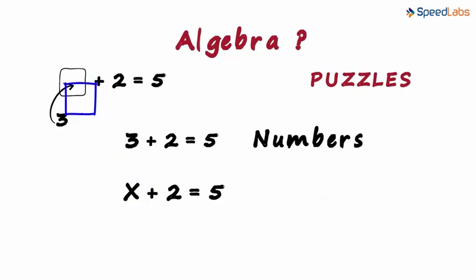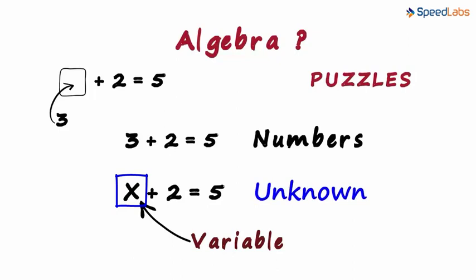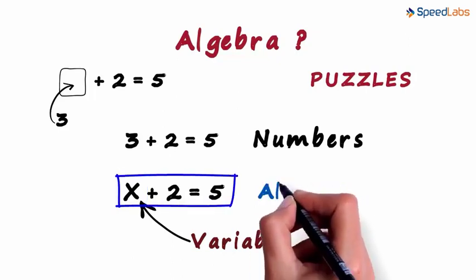We just used a letter in place of the box. These letters are also called as variables. Sometimes also referred to as the unknown since its value is not known to us. This is algebra.